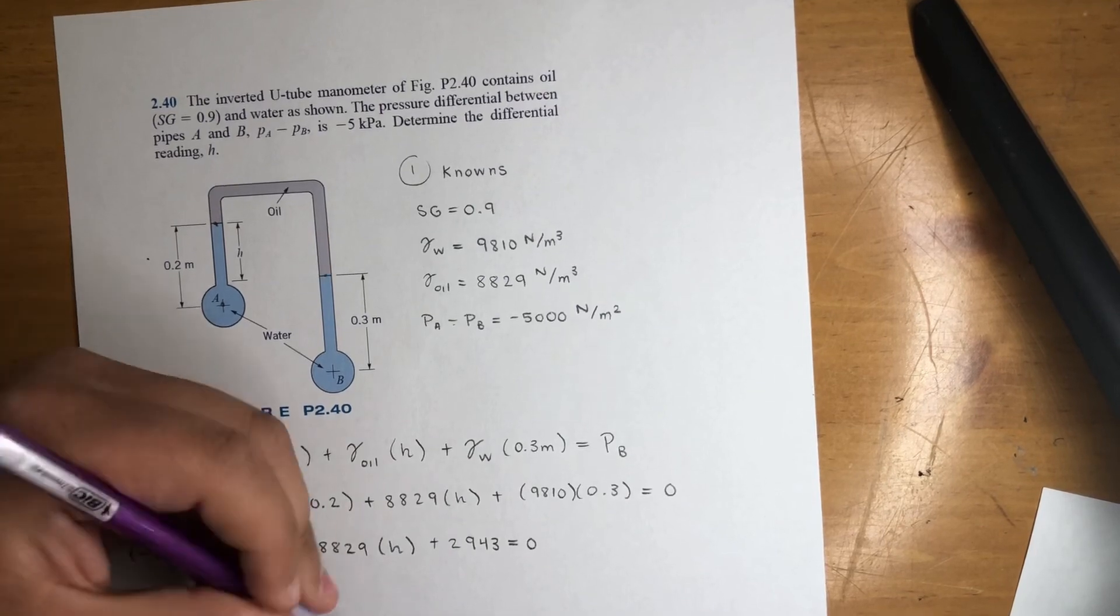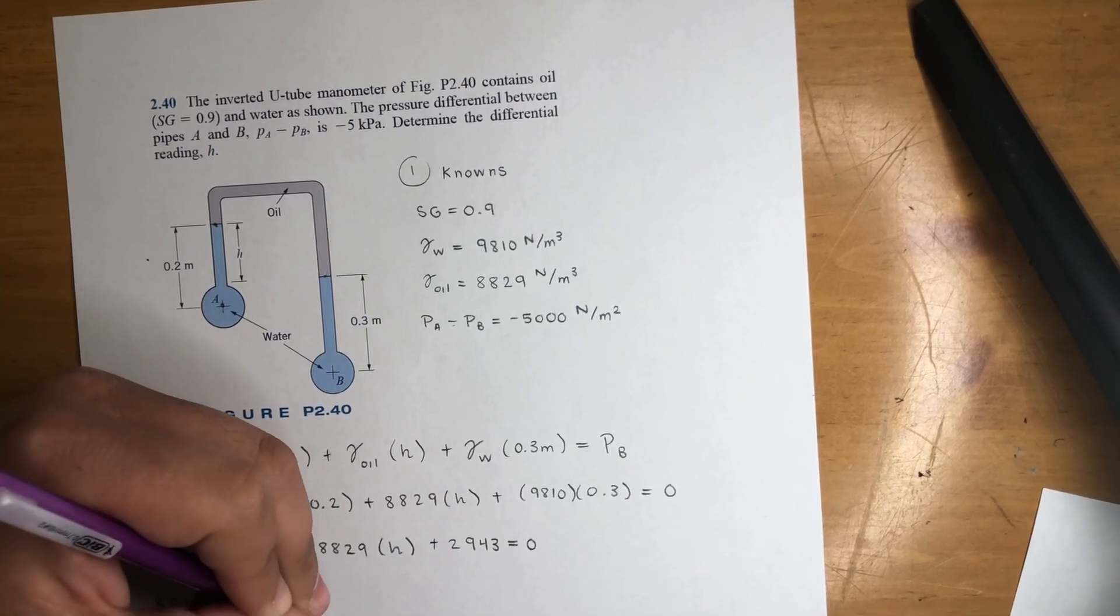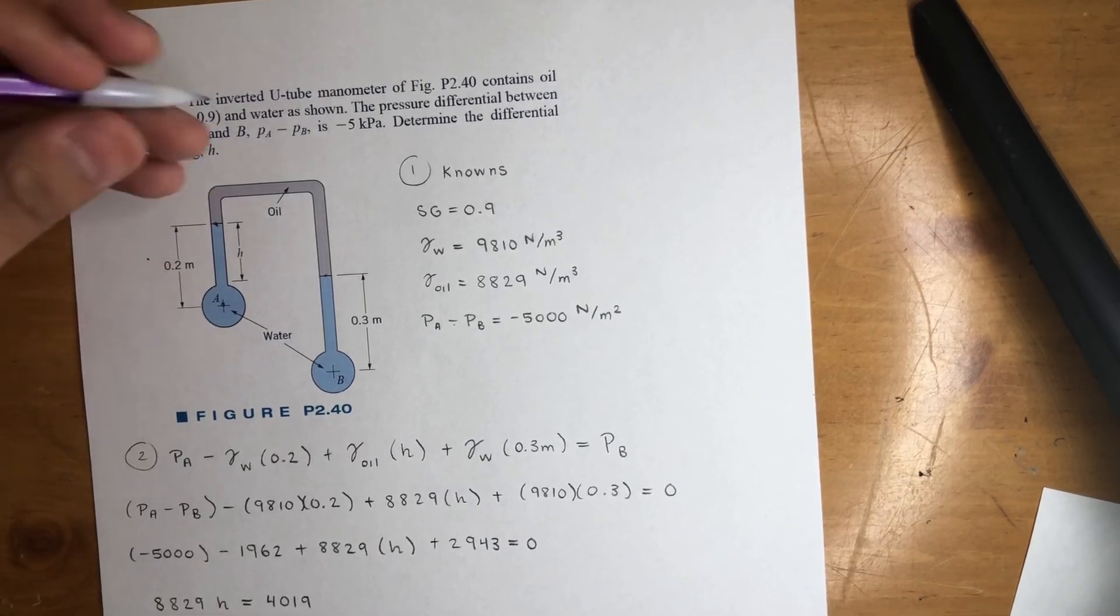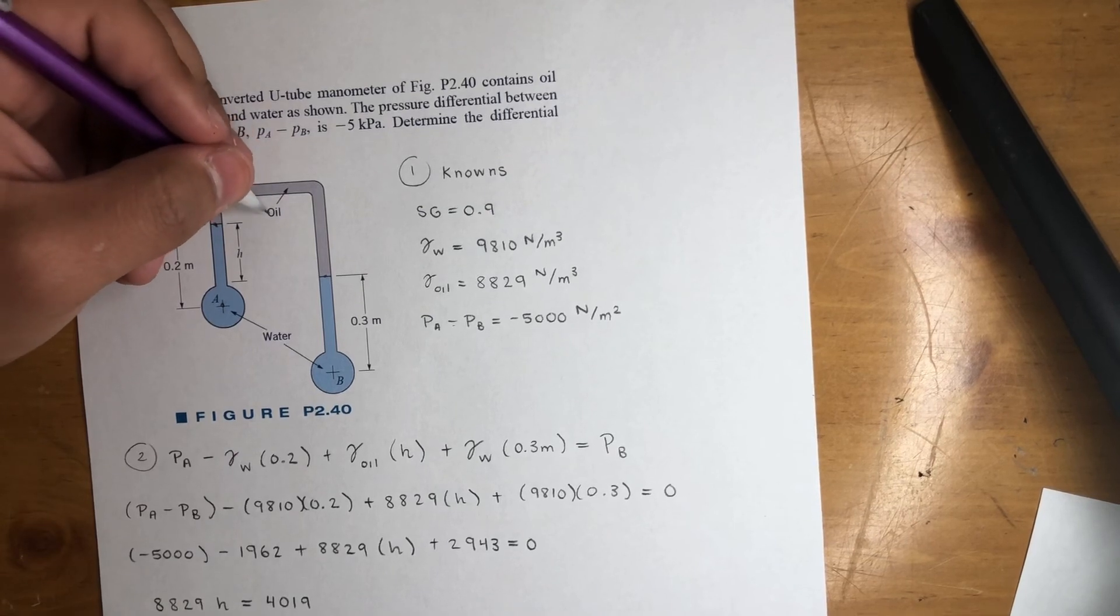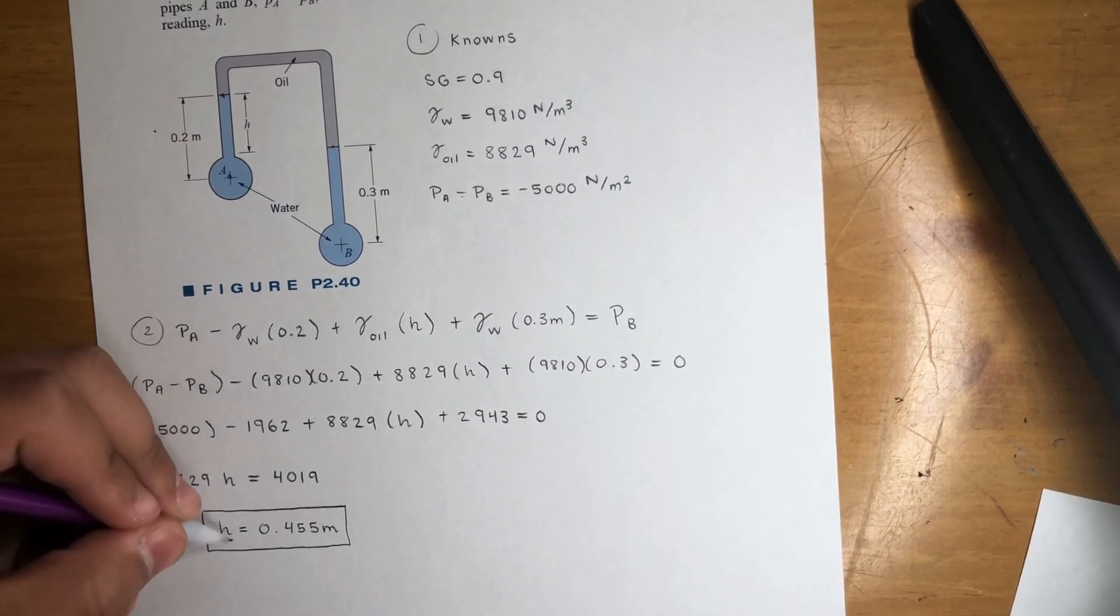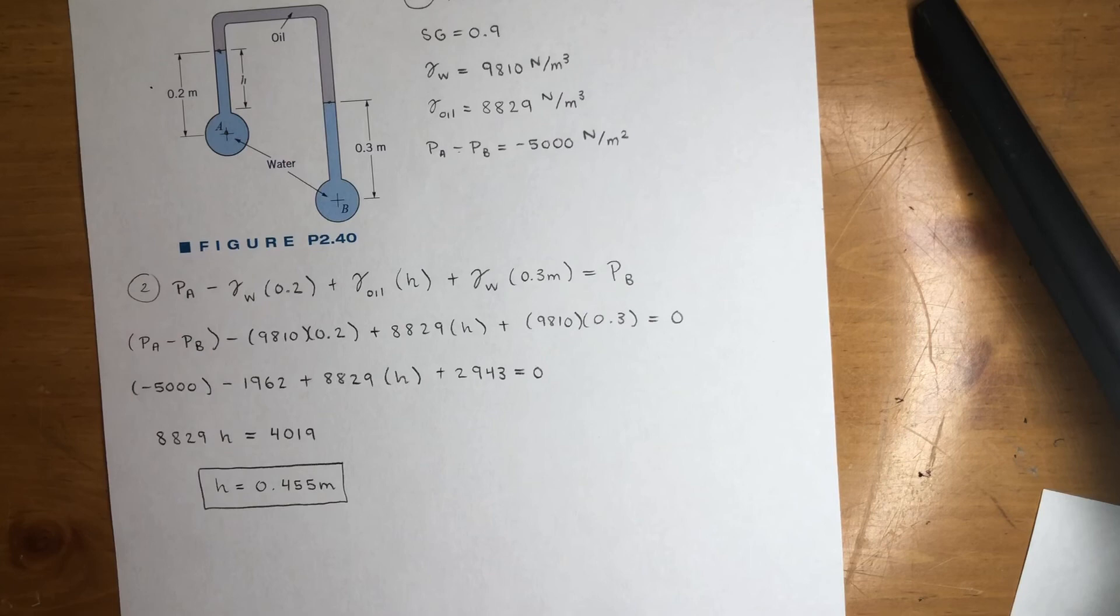And that's pretty straightforward on this one. Nothing too crazy. Just that sometimes problems are going to ask you to solve for height, sometimes for the specific weight of this fluid that in some cases we might not know. And yeah, other than that, sorry, I'm not sure you could see it, but there it is. H is equal to 0.455. And we should be good on this one.